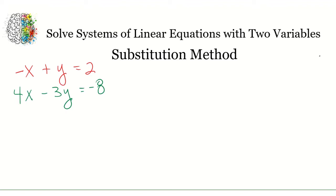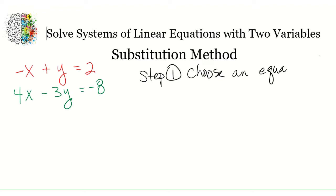To solve a system of linear equations with two variables using the substitution method, the first step is to choose one of the equations that you're given. It doesn't matter which of the two equations you use. I like to choose whichever equation is the simplest and has the smallest coefficients in front of my variables. So I'm going to start by choosing this first one listed here in red — that's minus x plus y equals two.